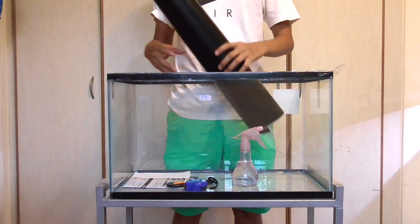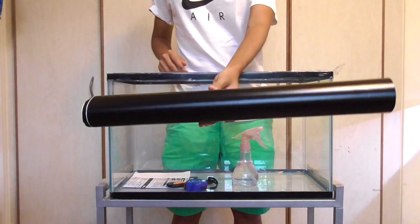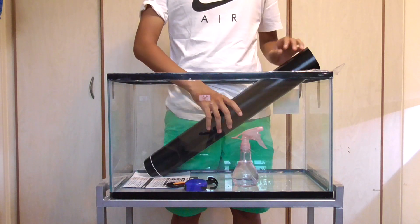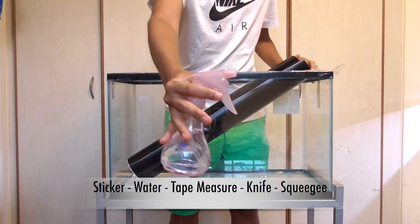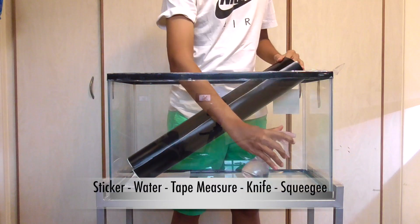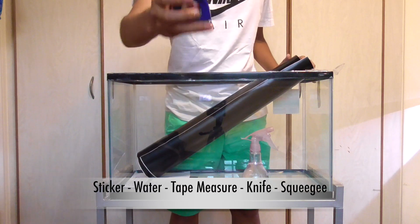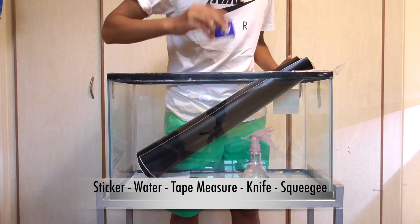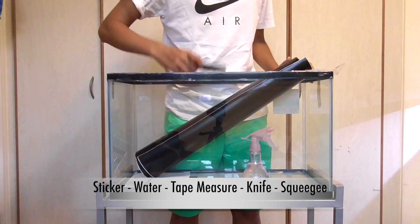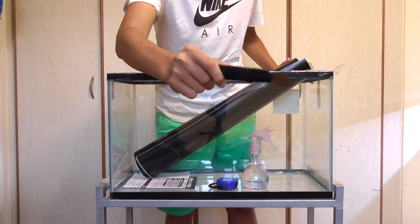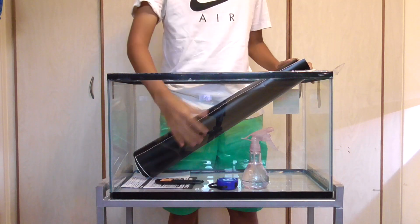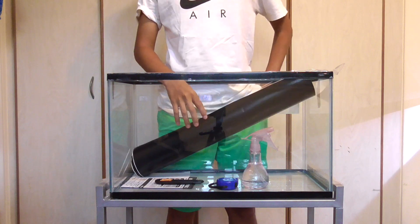So you're going to need a few things. First, you'll need your sticker paper for your background. Then you'll need water inside a spray bottle. And then you'll need a tape measure and a knife cutter. You also will need a squeegee or some kind of card that you can use.